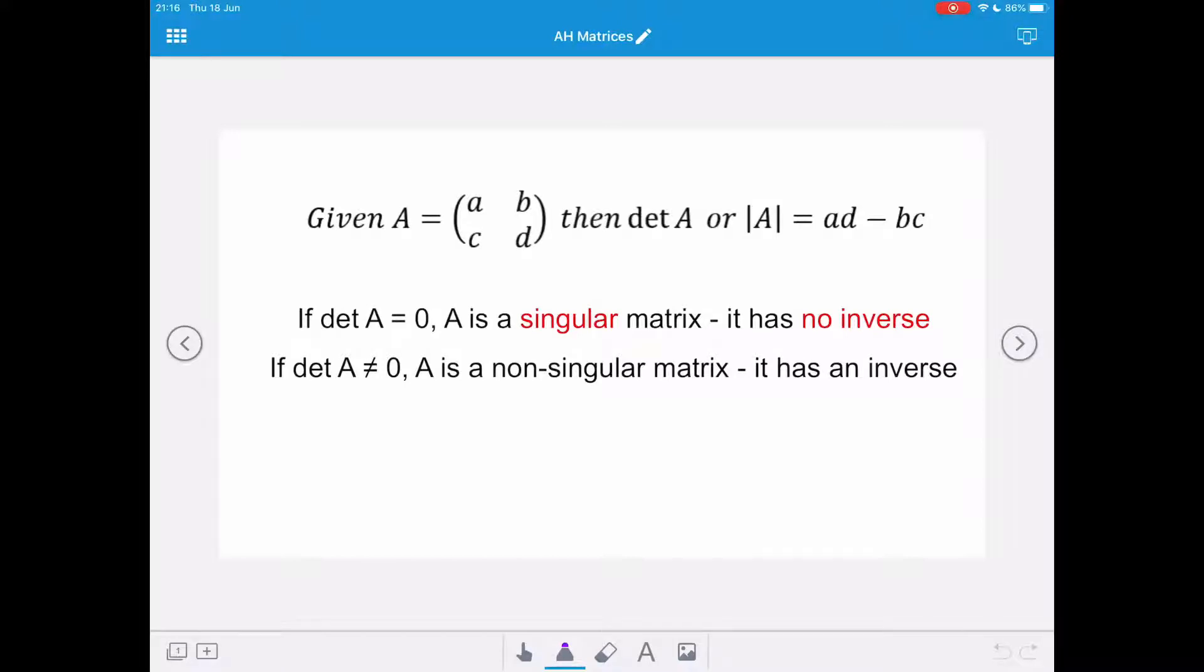If the determinant of A equals 0, then matrix A is a singular matrix and it has no inverse. If the determinant of A is not equal to 0, then A is a non-singular matrix and it does have an inverse.